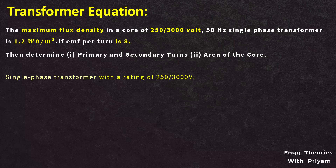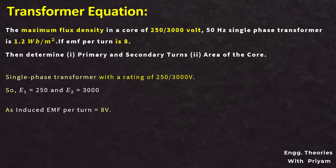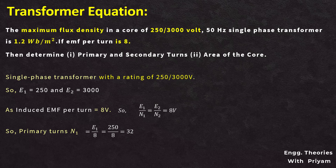The rating of the single-phase transformer is given as 250 by 3000 volt, so the induced EMF in the primary E1 is equal to 250 volt and induced EMF in the secondary E2 is equal to 3000 volt. Since the induced EMF per turn is 8 volt, we have E1 by N1 equals E2 by N2 equals 8 volt. The number of turns in primary N1 equals E1 divided by the induced EMF per turn: 250 by 8, which equals 32 turns.